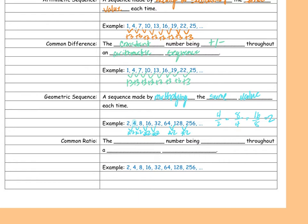Our last vocabulary word: common ratio — the constant number being multiplied throughout a geometric sequence. Using the same example, I'm multiplying by two every time, so multiply by two — that's my common ratio.